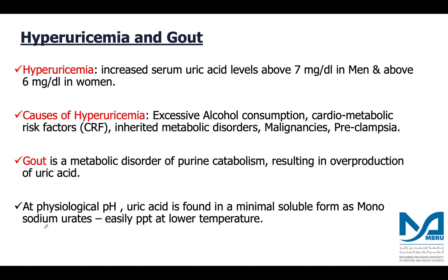Hyperuricemia designates increased serum uric acid levels — above 7 milligrams per deciliter in men and above 6 milligrams per deciliter in women. The causes of hyperuricemia may include excessive alcohol consumption, cardiometabolic risk factors, inherited metabolic disorders, malignancies, and preeclampsia.